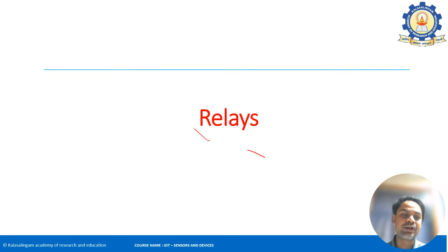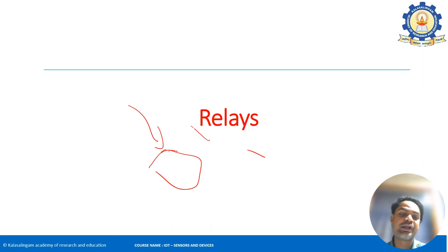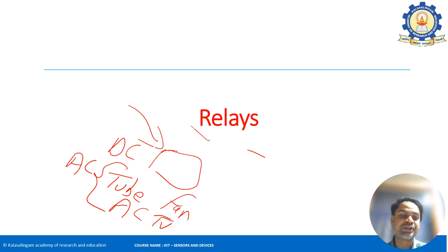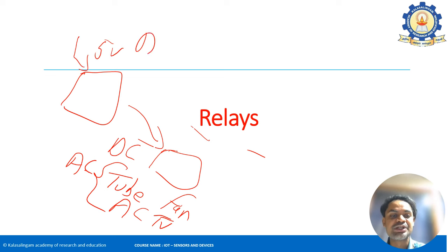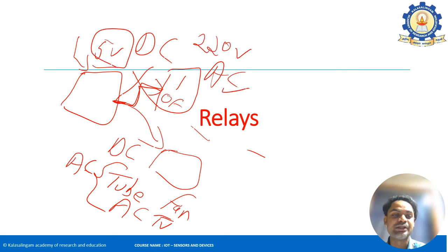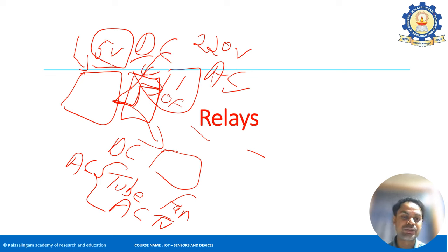A relay is needed to control AC appliances from a microcontroller. Output devices like LCD displays work with DC, but appliances like fans, tube lights, and air conditioners run on AC (220V). A microcontroller outputs only 5V DC, so you cannot connect it directly to AC. The relay acts as a bridge — an electronic switch — between the microcontroller's DC output and the AC appliance.